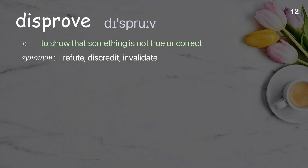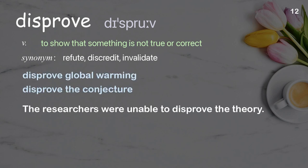Disprove: to show that something is not true or correct. Examples: disprove global warming, disprove the conjecture. The researchers were unable to disprove the theory.